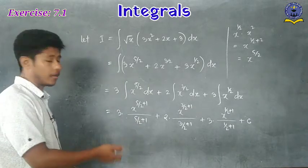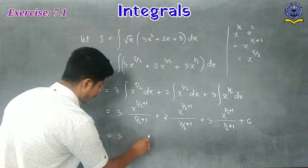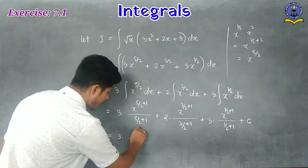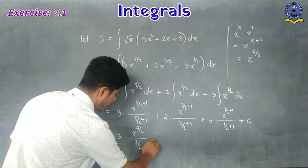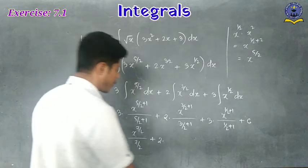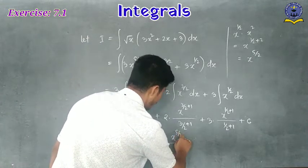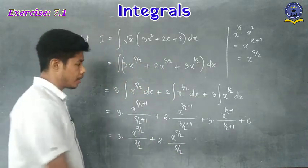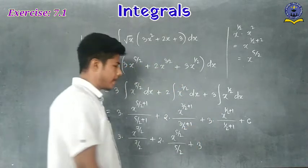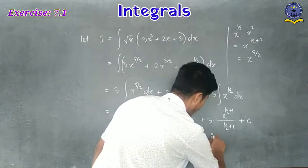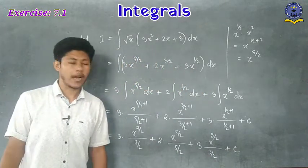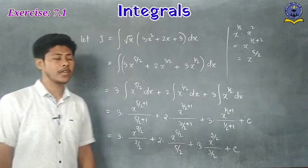Calculating: 5/2 + 1 = 7/2, so the first term is x^(7/2)/(7/2); 3/2 + 1 = 5/2, so the second term is x^(5/2)/(5/2); 1/2 + 1 = 3/2, so the third term is x^(3/2)/(3/2). The final answer is 3·x^(7/2)/(7/2) + 2·x^(5/2)/(5/2) + 3·x^(3/2)/(3/2) + C.